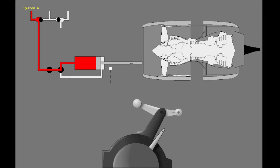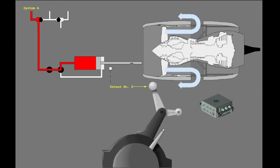Raise the reverse thrust levers to detent number two. In detent number two, the EEC sets sufficient reverse thrust for normal operation. If maximum reverse is necessary, you can raise the reverse thrust levers beyond detent number two. Now raise the reverse thrust levers to the maximum reverse position.